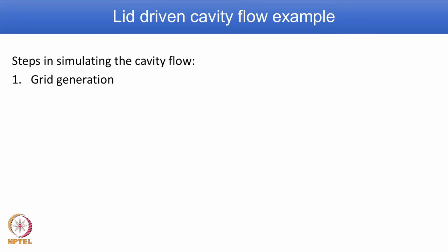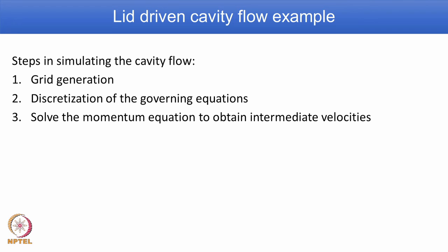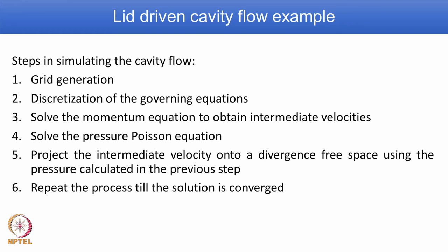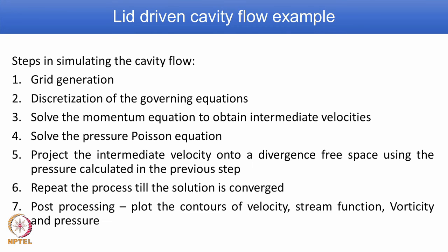Steps in simulating cavity flow: first, do grid generation; then discretize the governing equations; solve the momentum equation to obtain intermediate velocities u* and v*; solve the pressure Poisson equation; project the intermediate velocity onto the divergence-free space using the calculated pressure; then repeat the process until the solution converges based on a defined convergence criterion. Once you get the solution, we are interested in post processing — contours, lines, or advanced post processing such as stream function and vorticity contours.